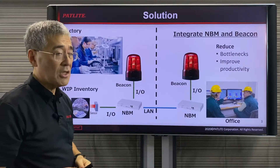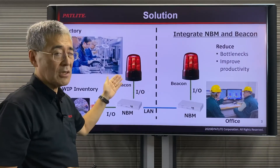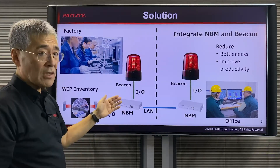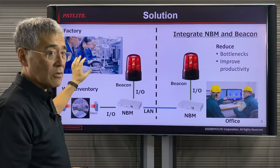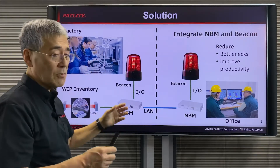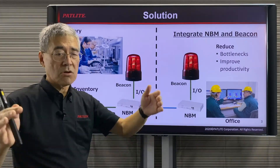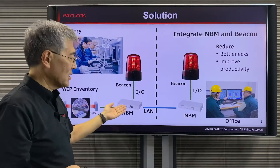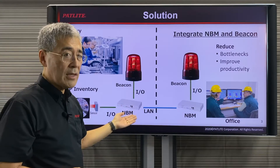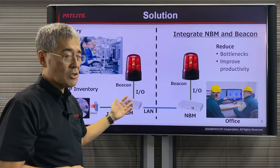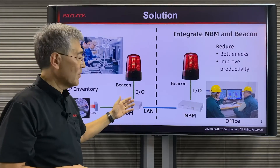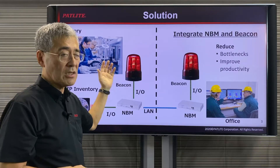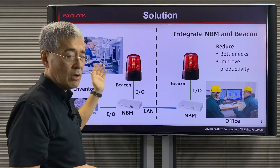We'd like to propose that you integrate our multi-function LED beacon and our NBM interface converter. As product is being completed in one location, it will typically go into bins or go on a pallet. A sensor could sense the presence of product there and send the signal to the NBM. The NBM will in turn start a clock so that once the time has come, it will turn on the beacon so that people around will know when it's time to move the inventory from one location to the other.